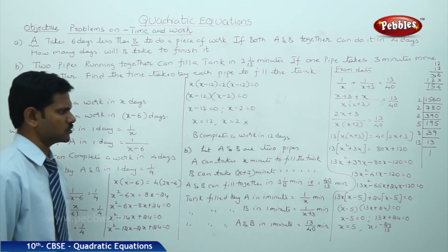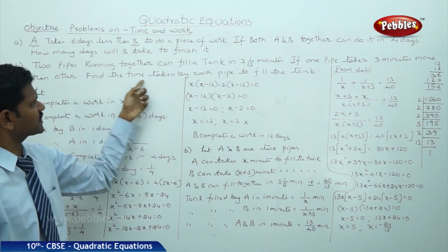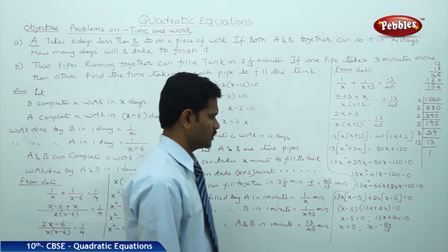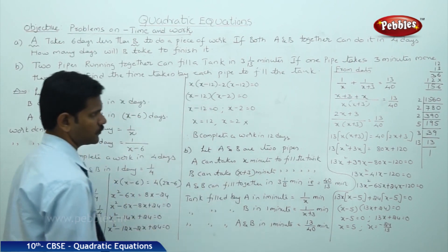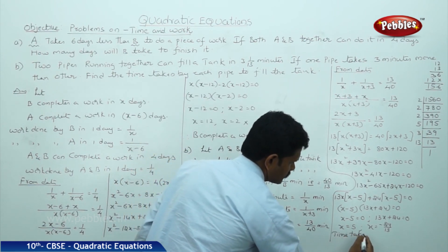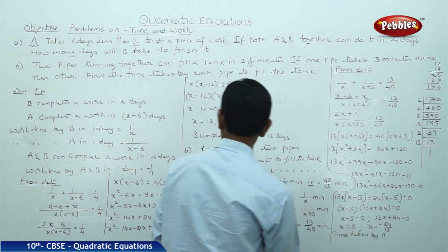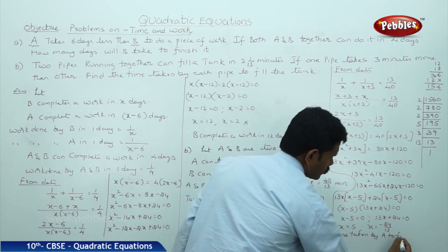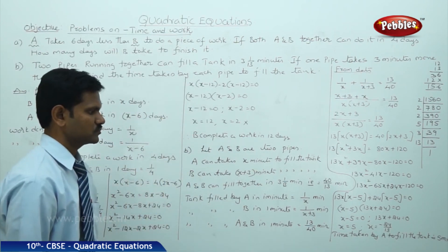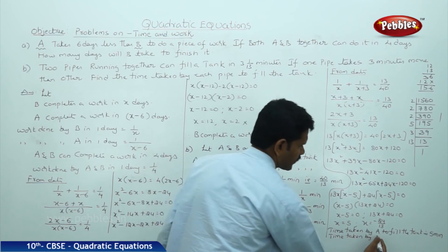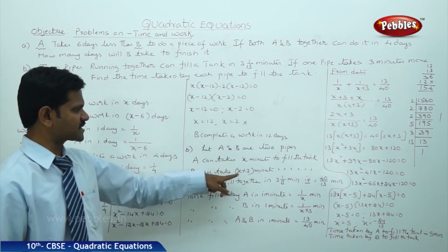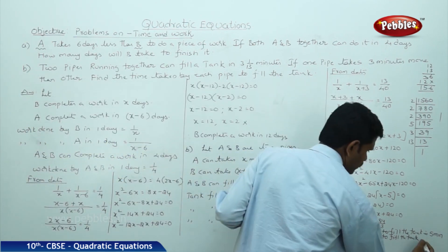We need to find the time taken by each pipe to fill the tank. The second option is negative and not considerable. Therefore, time taken by A to fill the tank is 5 minutes. Time taken by B to fill the tank is X plus 3, that is 5 plus 3 equals 8 minutes.